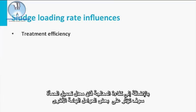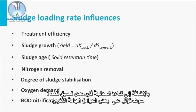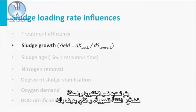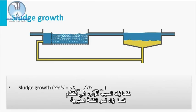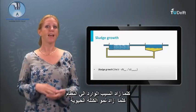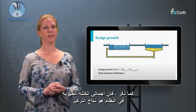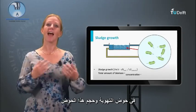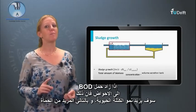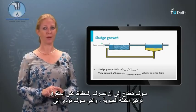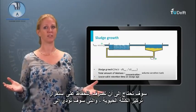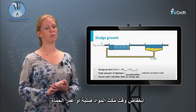Besides the treatment efficiency, the sludge loading rate will influence some other crucial parameters. Growth of the bacteria is determined by the yield of the biomass, defined as the amount of cell mass produced per unit of substrate consumed. The more substrate introduced to the system, the more the biomass will grow. The total amount of biomass in the system is the product of the concentration in the aeration tank and the volume of this tank. If the BOD load to the tanks increases, so will the biomass growth, and thus more sludge will need to be wasted to maintain a stable biomass concentration, which will lead to a lower solid retention time or sludge age.